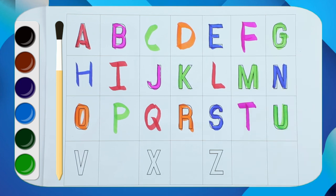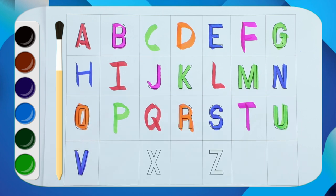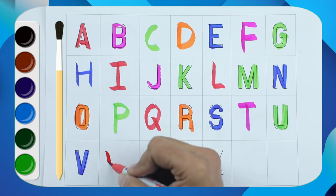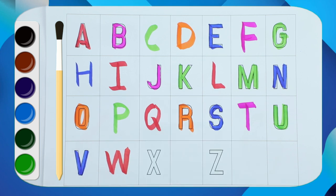What next? V for van. What next? W, it's called W. W for watch.